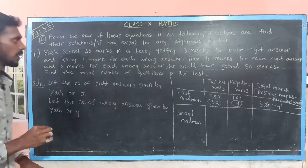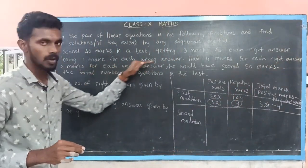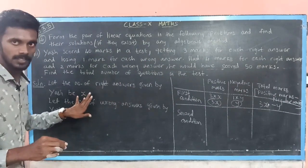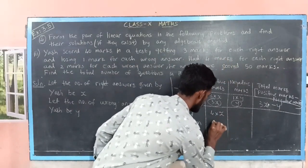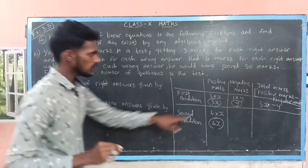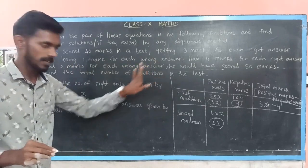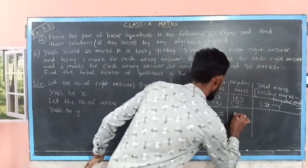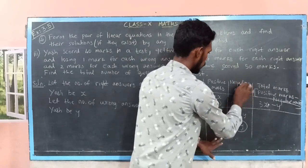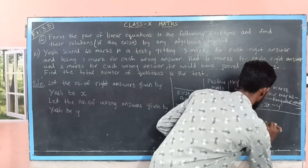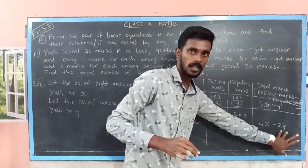Now for the second condition: he would have scored 50 marks if they awarded 4 marks for each right answer and reduced 2 marks for each wrong answer. The number of right answers is x and the marks awarded is 4, so the positive marks can be represented as 4x. The number of wrong answers is y and they reduce 2 marks per wrong answer, so the negative marks in the second condition are 2y. Thus the total marks for the second condition is 4x minus 2y.